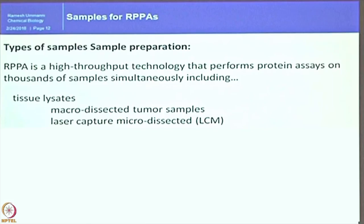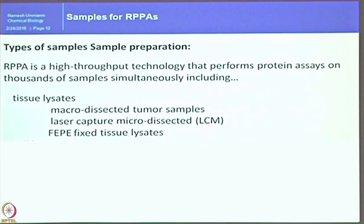With laser capture microdissection (LCM), you end up with very low quantity of sample and cannot perform many western blots to validate many targets. PFA-fixed tissue lysates can also be used — there are separate methods available to extract protein from formalin-fixed tissues for RPPA, since those samples sometimes cannot be analyzed by western blotting due to smearing effects.